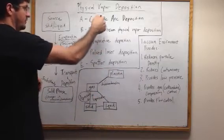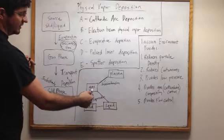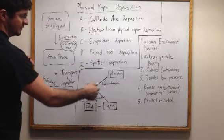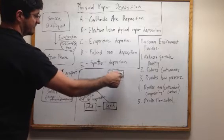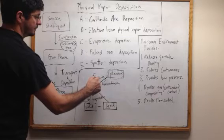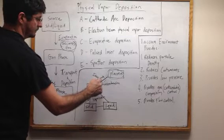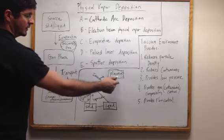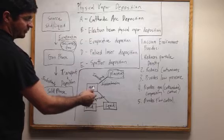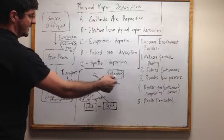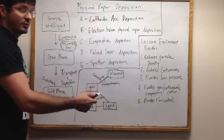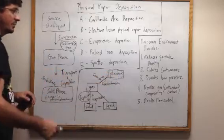Each one of these uses basic thermodynamics, in which a gas deposits into a solid and a solid is vaporized into a gas. In some cases it becomes a plasma, which means you can add recombination and ionization. Recombination is when plasma becomes a gas, which is exothermic. When gas becomes a plasma, it's endothermic — meaning it absorbs energy and becomes an ionized plasma.